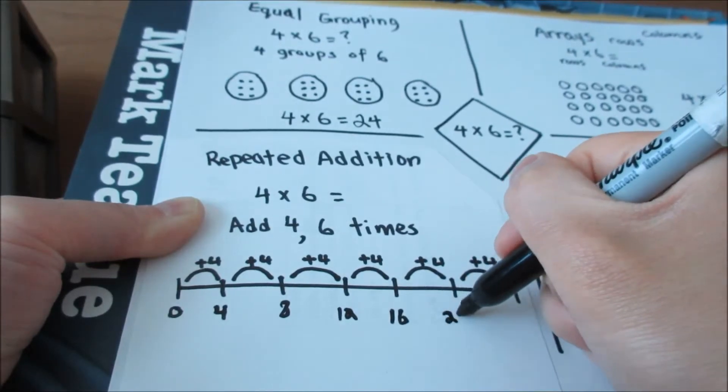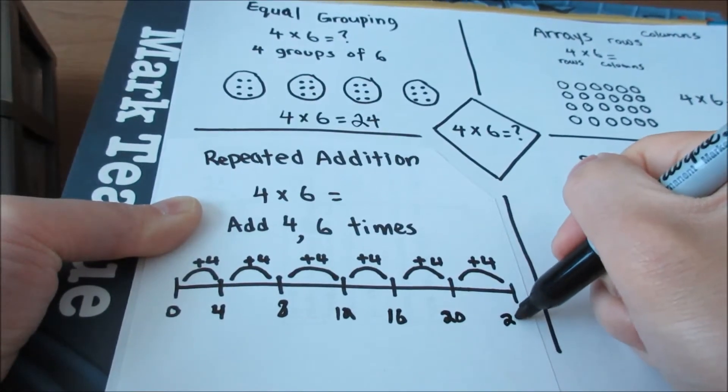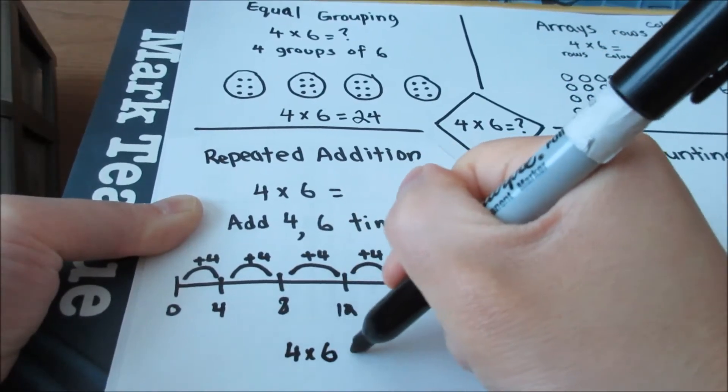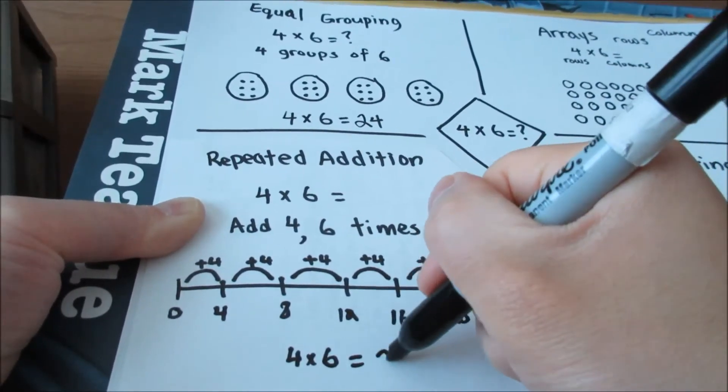When I add that all up, I get 24. So 4 times 6 is equal to 24.